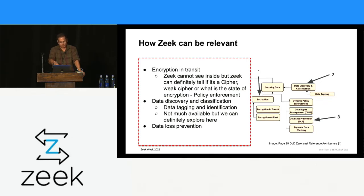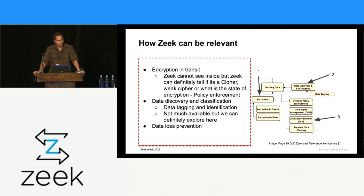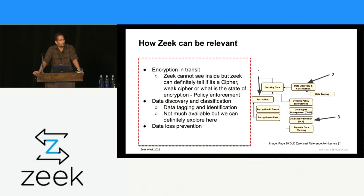One thing I picked out is encryption. Zeek cannot quite see things which are encrypted. But maybe we can use Zeek to check what kind of cipher was used — is it a weak cipher or strong cipher? SSL version 2, 3, 4? We can probably get certain insights that way, at least scratching the surface. And sometimes absence of a signal is a signal too — Zero Trust says everything is untrusted, everything should be encrypted, everything should be highly vetted. Can we create policies to ensure enforcement — like, why do I see a cleartext connection going here?